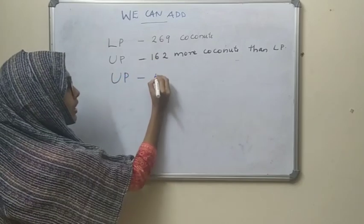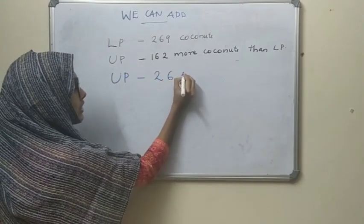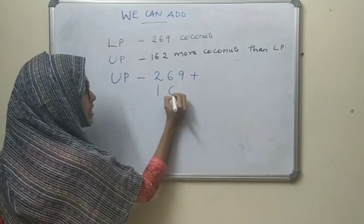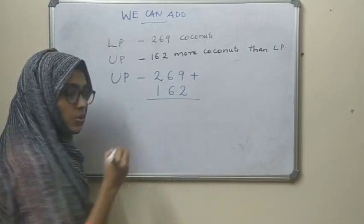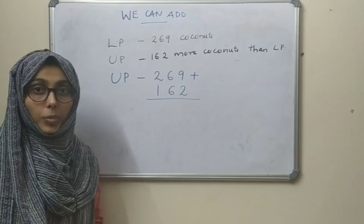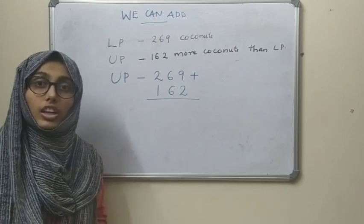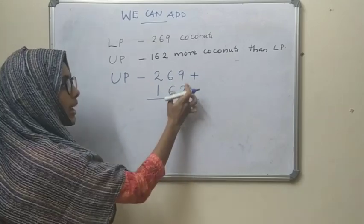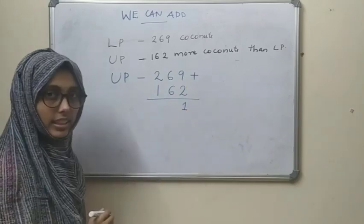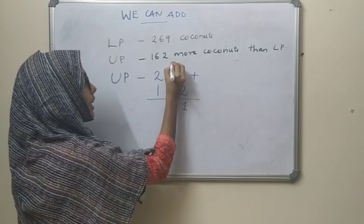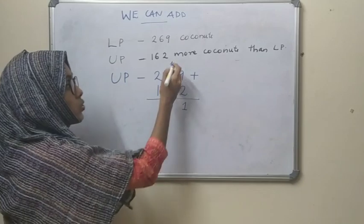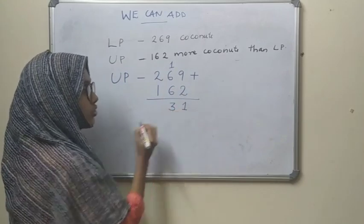That means we know that 269 plus 162. We will get how many coconuts were given by the UP section. So 9 plus 2 is 11 — we write 1 here and carry 1. Now 6 plus 6 is 12, plus 1 is 13, so we write 3 here and carry 1.